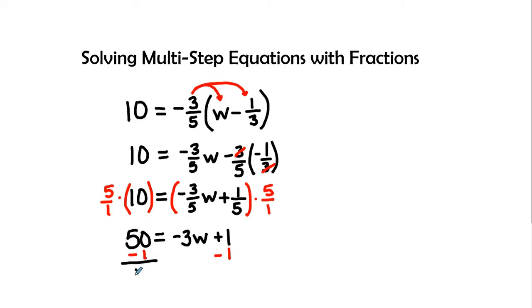This will give me 49 is equal to a negative three w. We then will divide by a negative three on both sides.